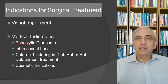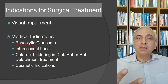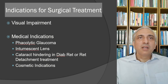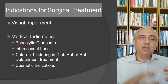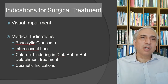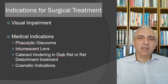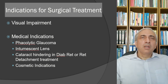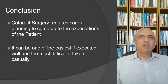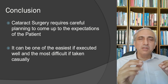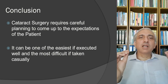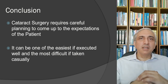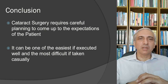Indications for surgical treatment include visual impairment — a laborer may need surgery at 6/36 while a driver may require it at 6/6 or 6/9. Medical indications include phacolytic glaucoma, intumescent cataract causing secondary angle closure glaucoma, and cataract hindering treatment of diabetic eye disease or retinal detachment. Cosmetic indication applies in a blind eye with a white pupil reflex.